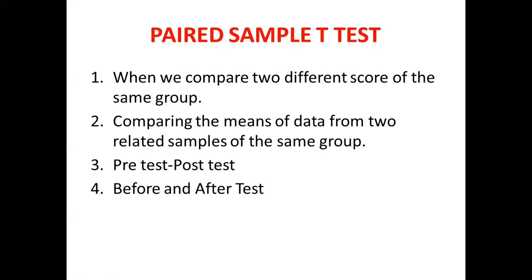The question is: when should we use the paired sample t-test? In the one sample t-test, we compare the means of our respondents with the known mean of the population. There should be two different groups, and one mean should be a known population mean. But in the paired sample t-test, there must be one group.